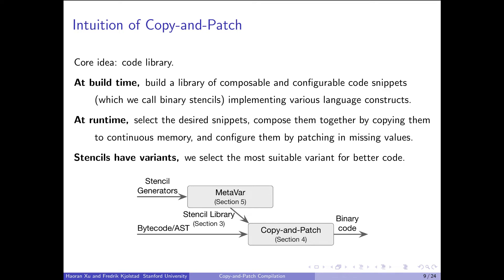The architecture is shown in the figure below. We have stencil generators, which are just ordinary C++ template functions. At build time, a special compiler pre-processes these stencil generators and generates a stencil library. This stencil library gets linked together with the main application. At runtime, the copy and patch algorithm selects stencils from the stencil library based on the runtime-known AST, composes them together, and patches missing values to produce executable code.